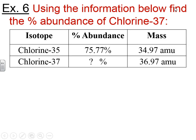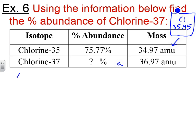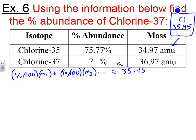Here is example six — let's do this one together. This one is the same thing, but backwards. We have the isotopes, their masses, and one known percent abundance, and we're solving for the unknown percent abundance. For chlorine, element number 17, the atomic mass is 35.45. Using our formula: percent over 100 times mass of isotope 1, plus percent over 100 times mass of isotope 2, equals 35.45.